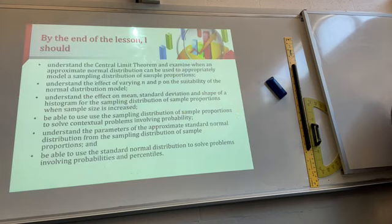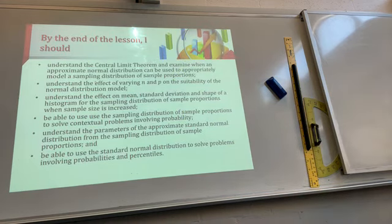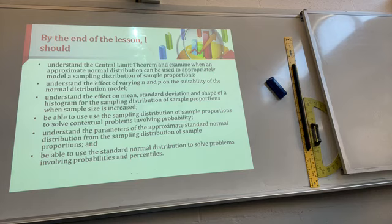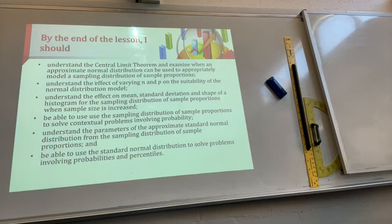Alright, central limit theorem. Yesterday we looked at point estimates. What we can do is, because we've got several samples — we don't always have one sample — you know that P hat is different from one sample to the other. If we don't know P, we know P hat, we can use a sample relief theorem, and you can approximate a normal distribution. So we need to think about the effect of varying N and P on the suitability of the normal distribution.